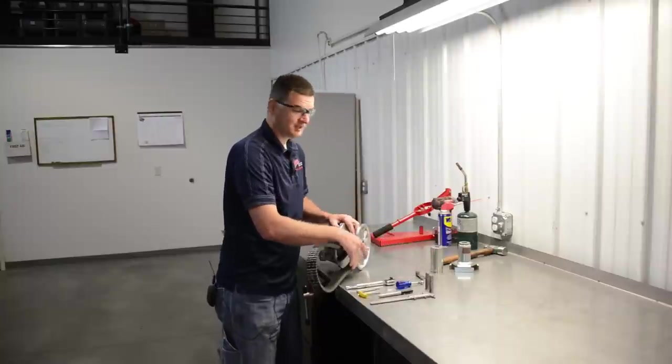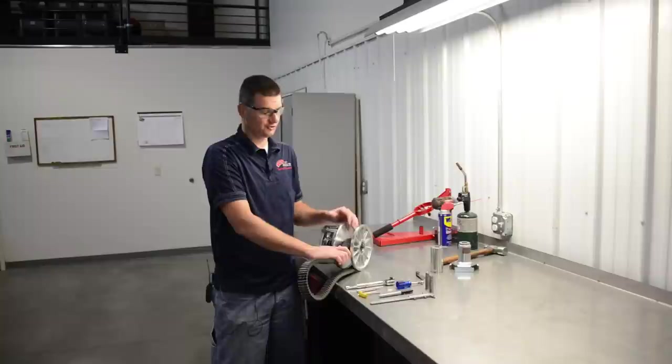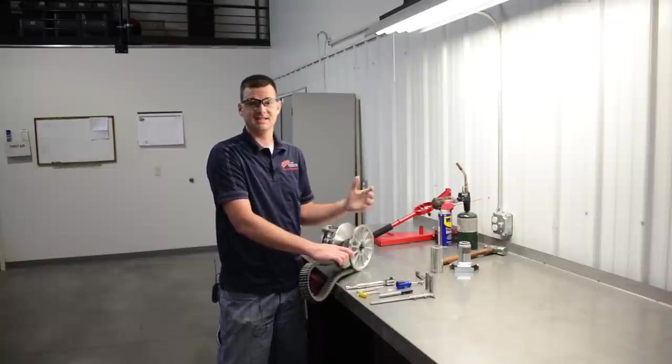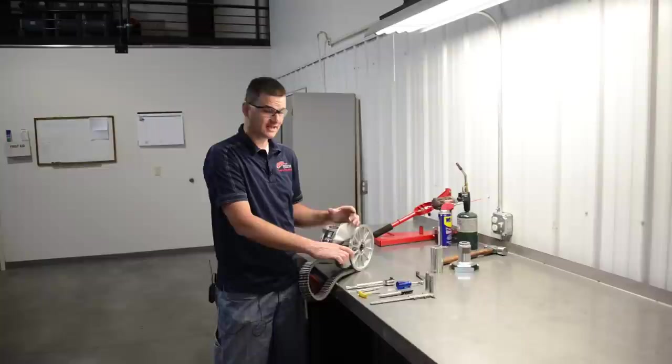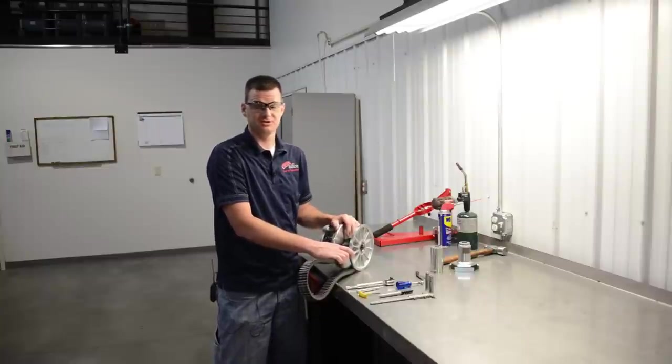In most applications you want between 10 and 20 thousandths belt to sheave clearance. Any more than 20 thousandths, we'll want to remove shims underneath the spider to tighten up that gap. Any less than 10 thousandths, we'll want to add shims to the spider in order to make the proper amount of belt to sheave clearance.